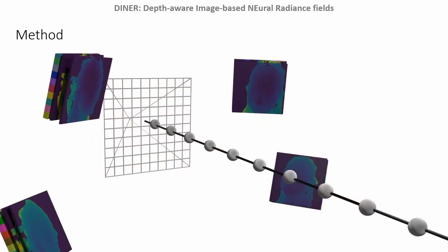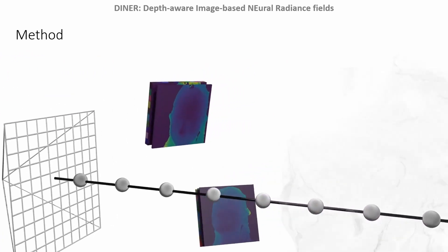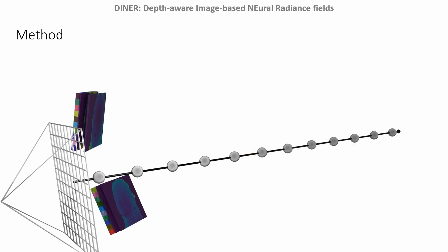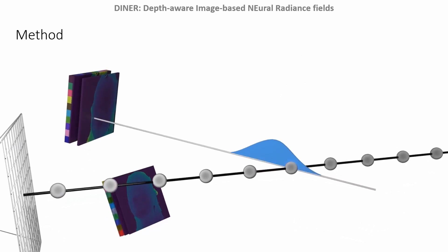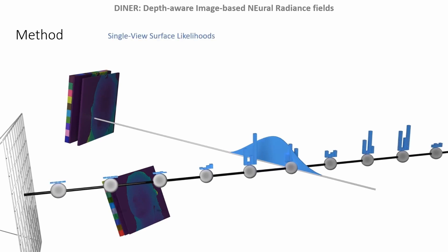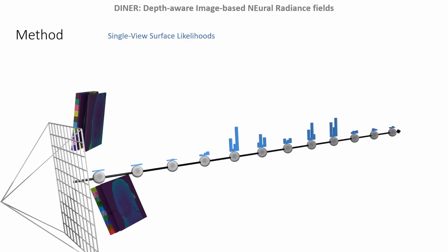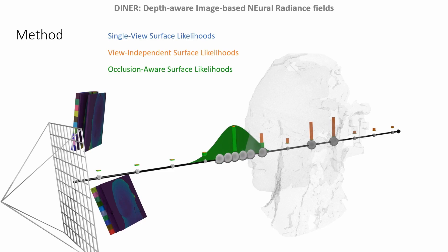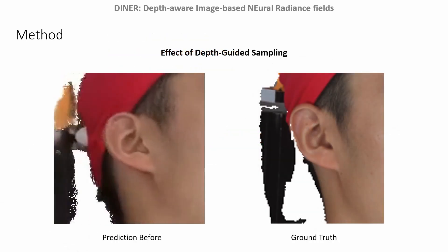Finally, we improve sampling efficiency using the predicted depth maps. We aim to maximize the sample density around regions where rays intersect with the object surfaces, since these regions contribute most to the ray color. The estimated depth and standard deviation maps define probability distributions for where object surfaces lie. This allows us to determine the surface likelihoods of every sampled point with respect to each view individually. We apply max pooling to obtain view-independent likelihoods and then shortlist samples with the highest values. To increase the sample density around the first ray intersection, we first calculate occlusion-aware likelihoods, then fit a probability distribution and sample additional points accordingly. As a result, the synthesis quality around thin surfaces like ears improves.